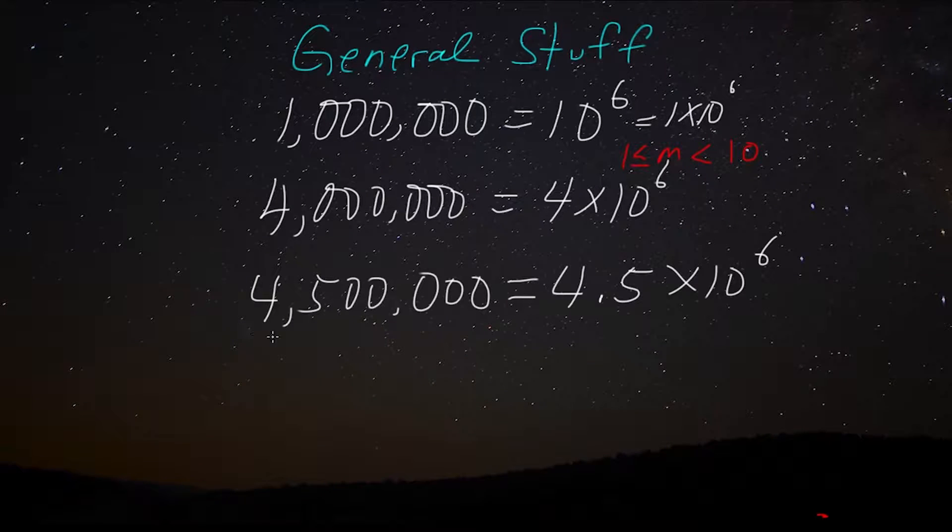Remember, we want this multiplier, this multiplier down here, to be less than 10, or greater than or equal to one. So we don't want this to be 445. We want this to be 4.5. And then we're going to allow the power of 10 to take care of the rest of the digits after our multiplier.